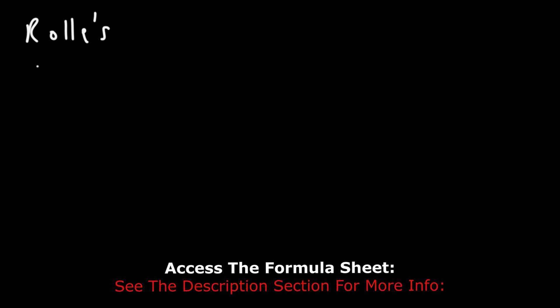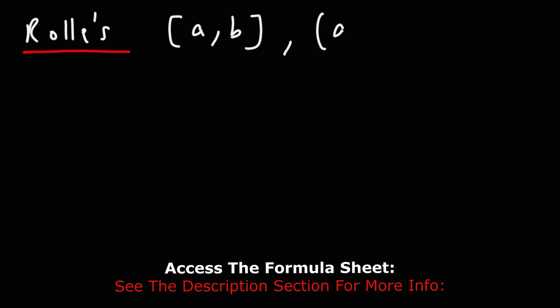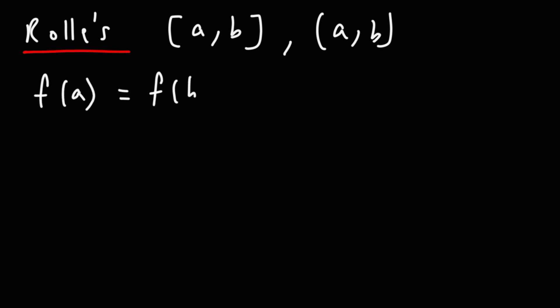The next theorem we need to be familiar with is Rolle's theorem. If F of X is continuous on the closed interval AB and differentiable on the open interval AB, and if F of A is equal to F of B — if these three conditions are met — then there's going to be some number C in the open interval AB where F prime of C is equal to zero.